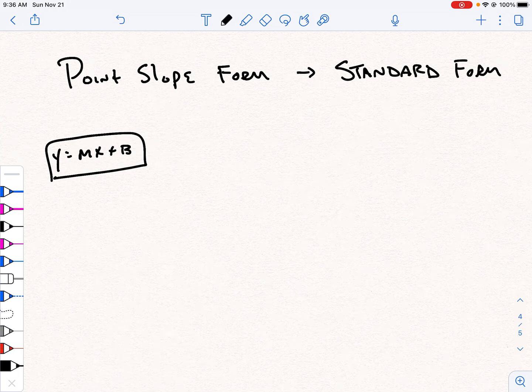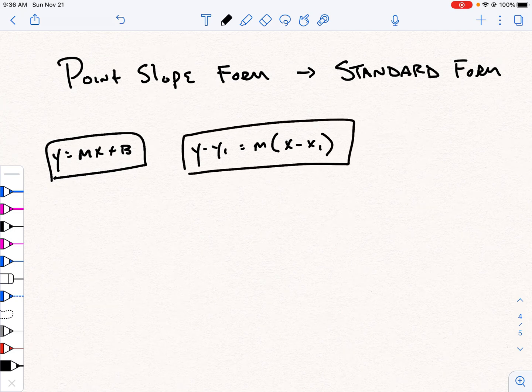There is point-slope form, which is y minus y sub 1 equals m times the quantity x minus x sub 1. That's the one we are going to use here. And this is kind of an in-between step. So this one is, I'm going to give it a super neutral rating.